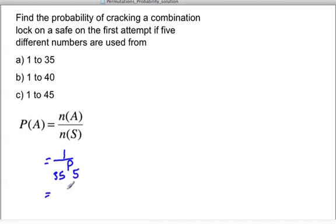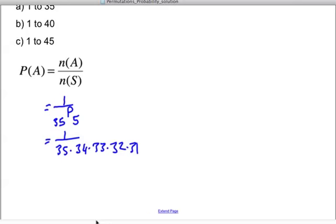This will simplify because 35 choose 5 is just 35 times 34 times 33 times 32 times 31. And this then is equal to 1 over 38,955,840.